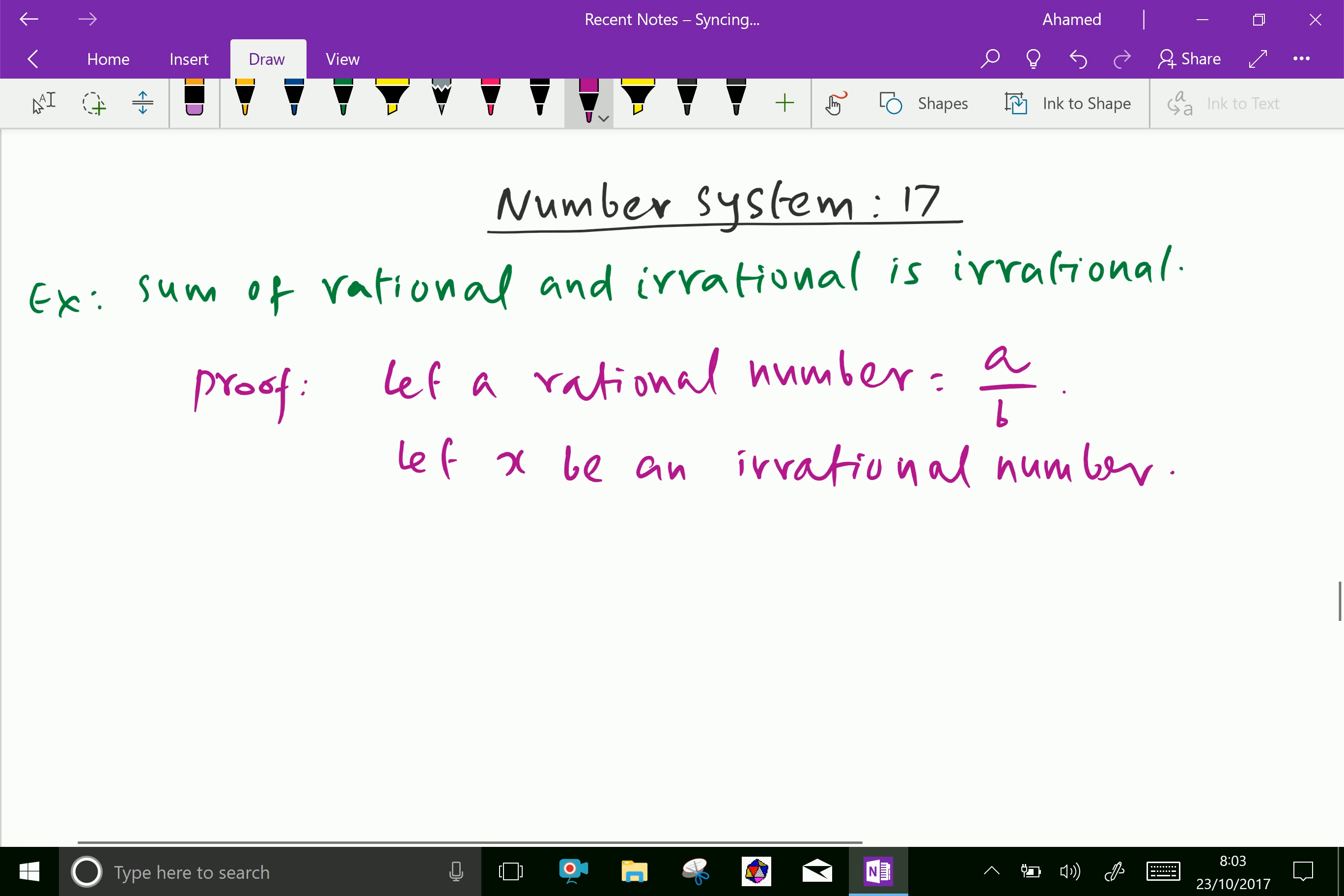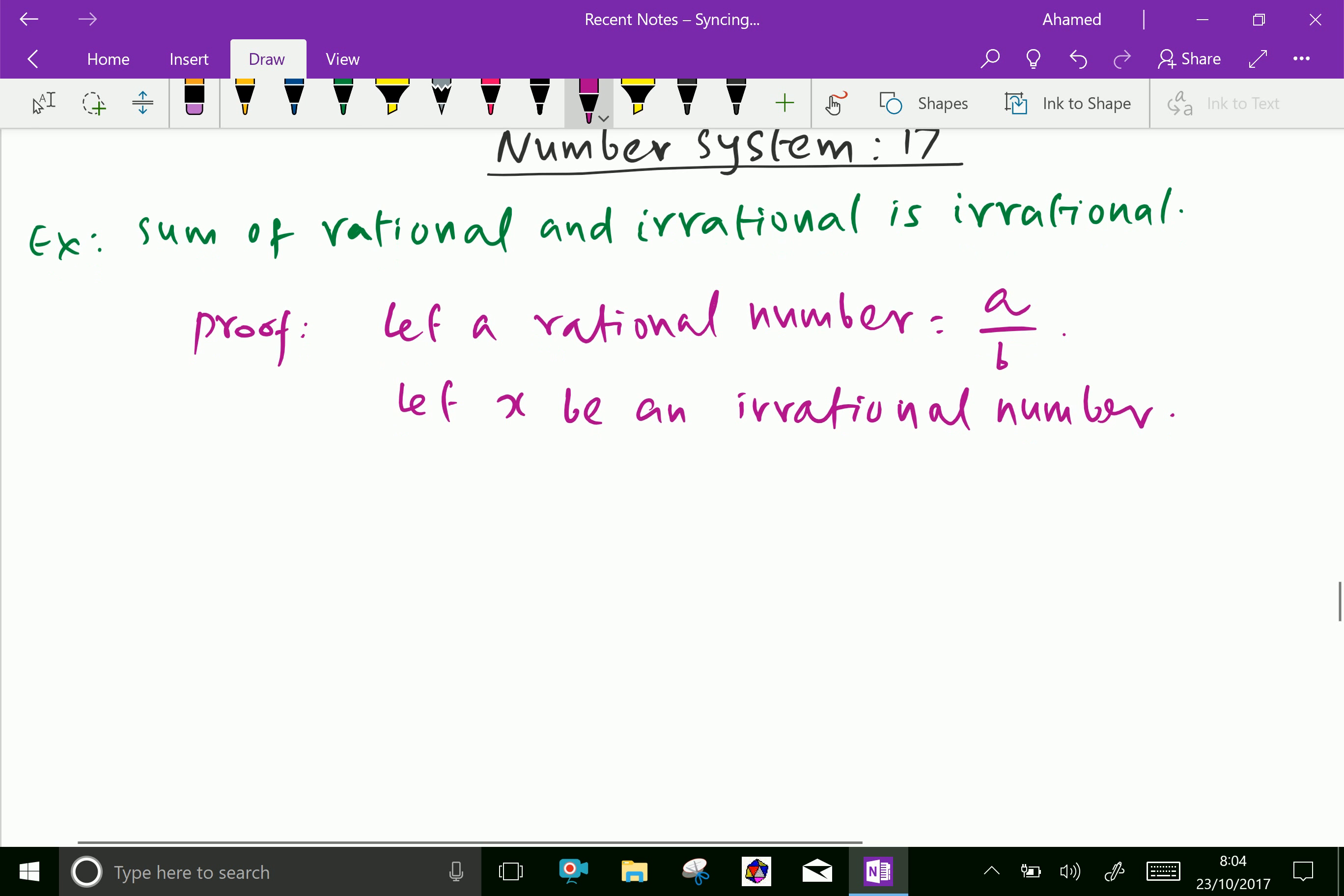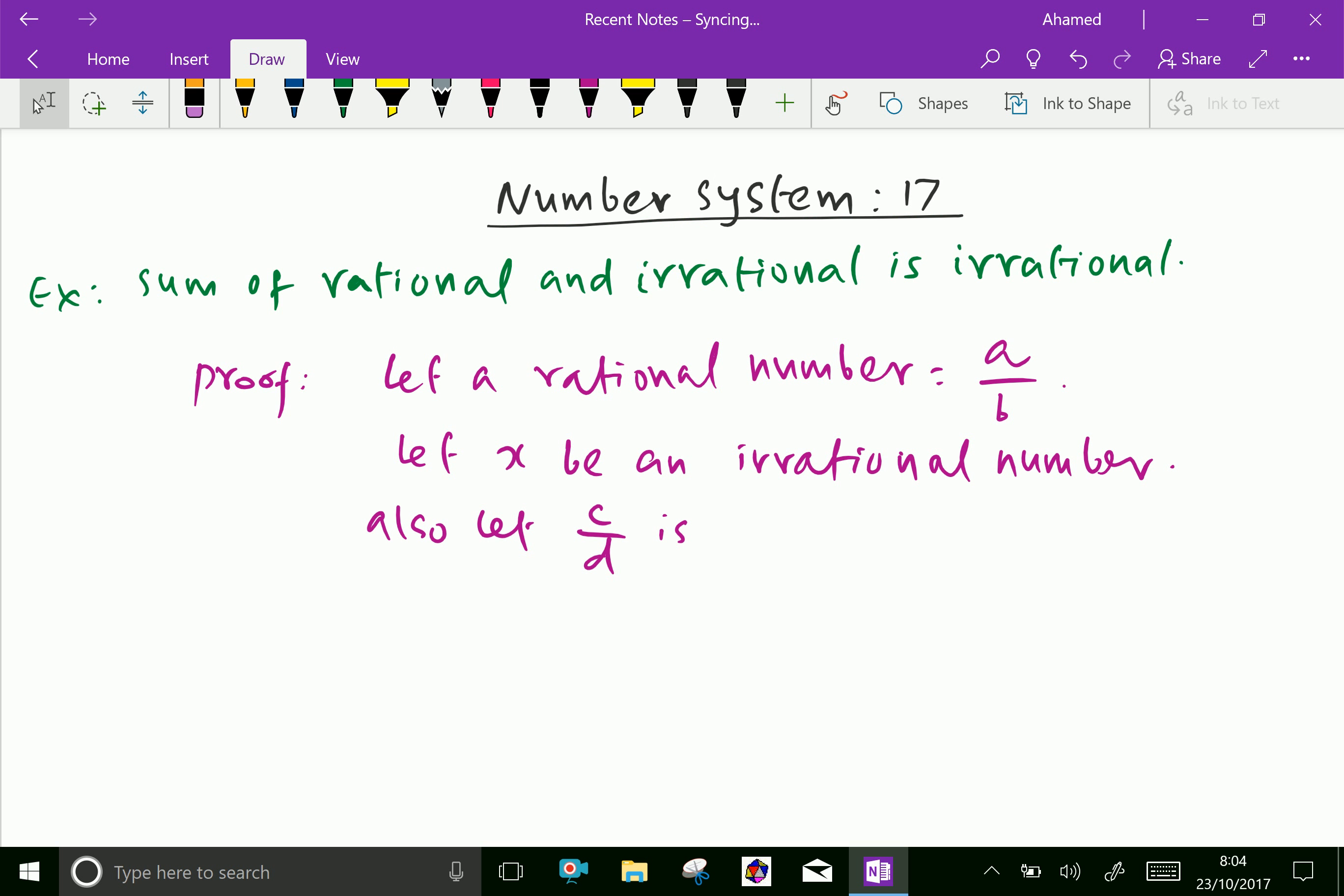Now, we have to prove rational plus irrational is irrational. Also, let c/d be another rational number.